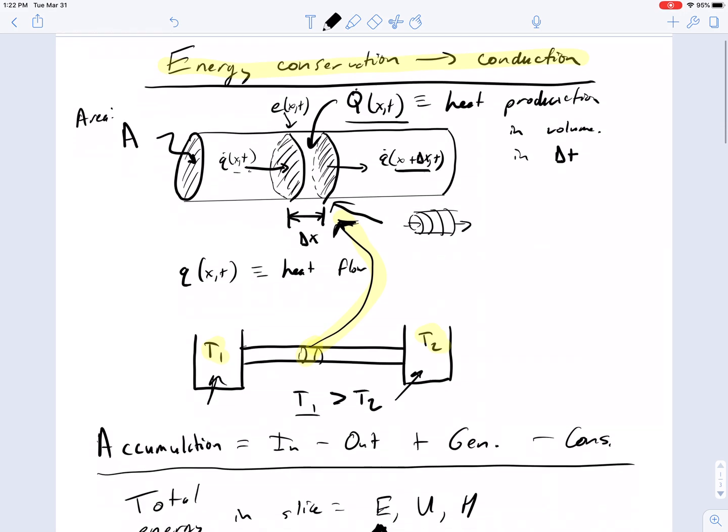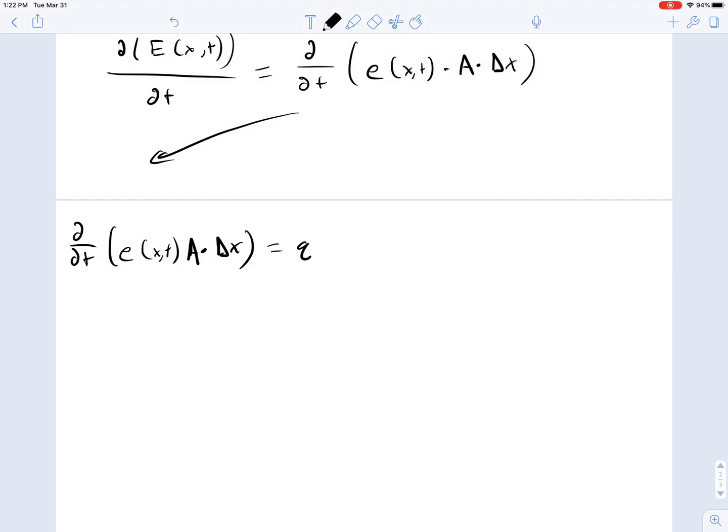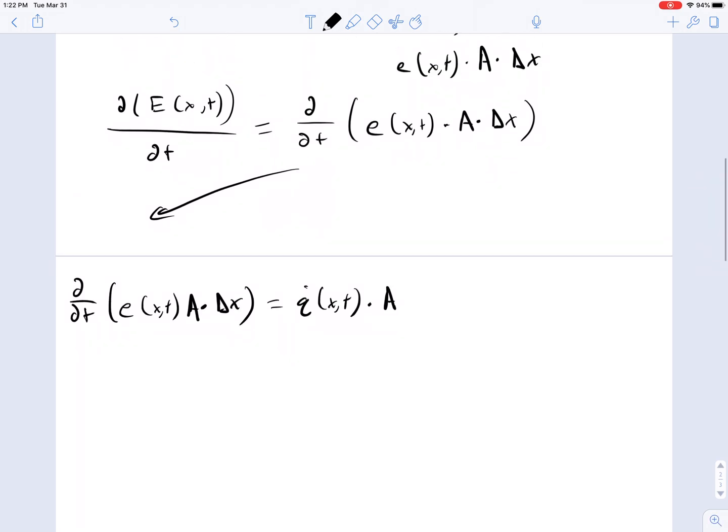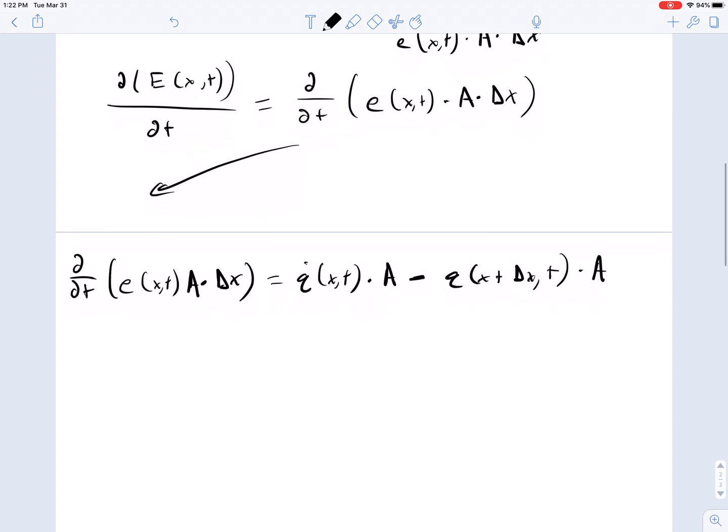Also, within this volume, we could have chemical reactions or some other supply of heat energy. So we have q(x,t) times A because this is heat flow per unit area, minus what's leaving q at x plus delta x times area, plus q dot within that volume. This is generation/consumption in volume, and this is across the boundaries of that little control volume.